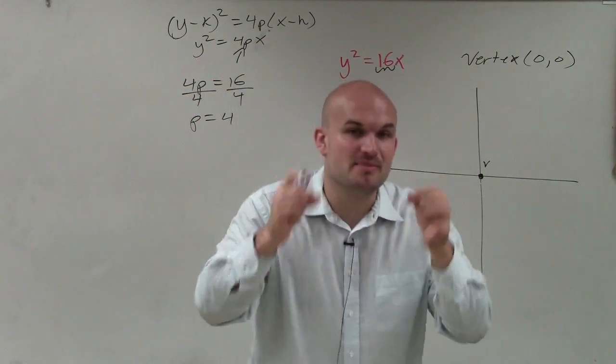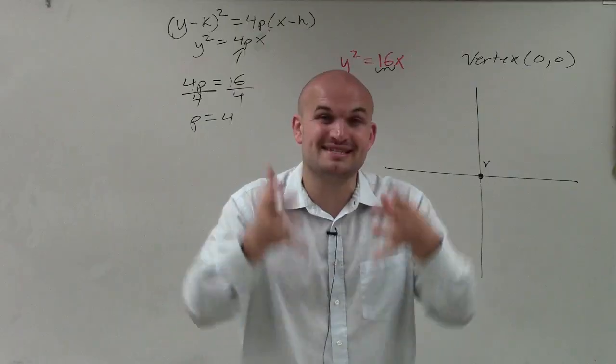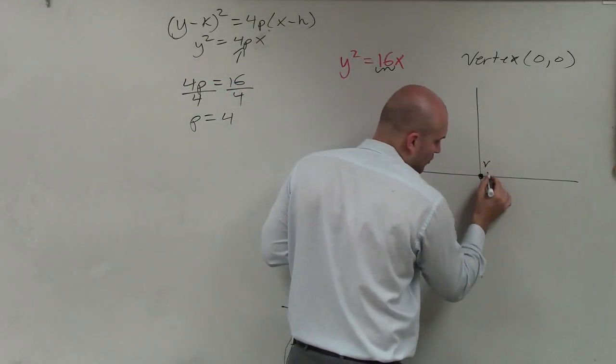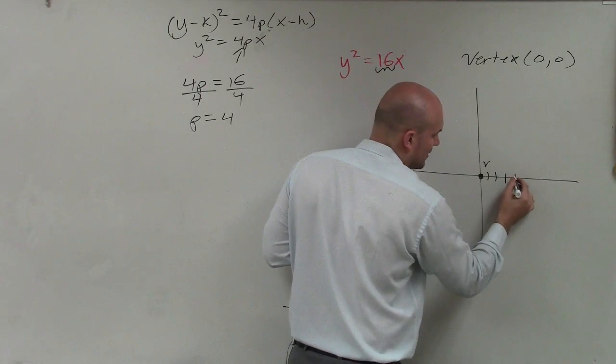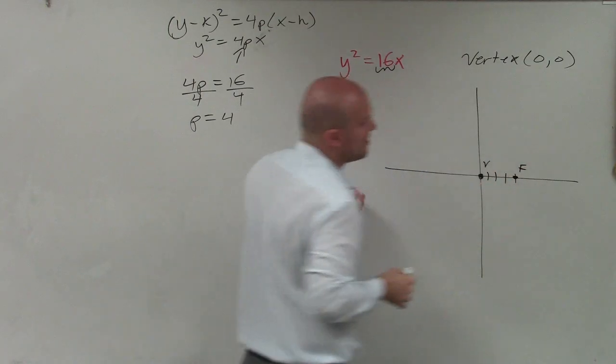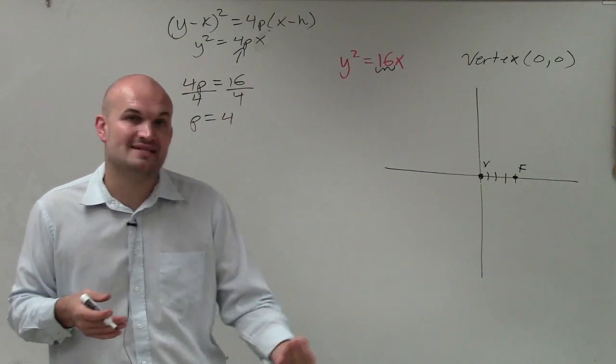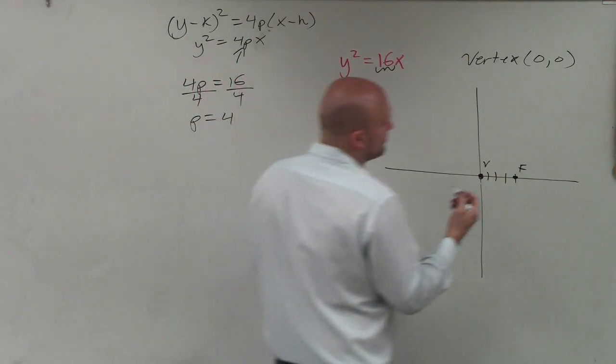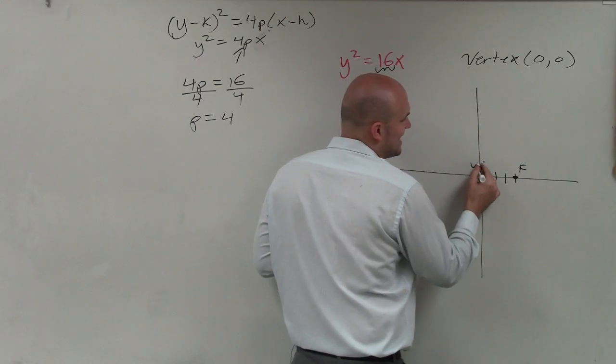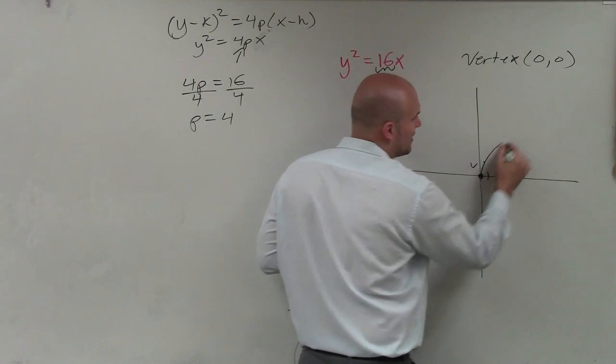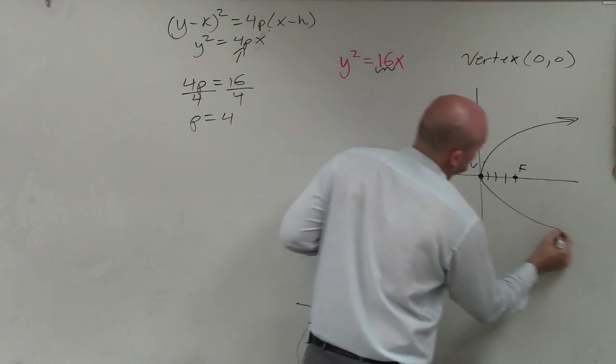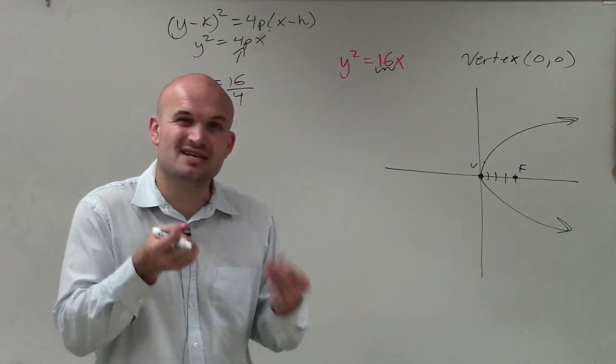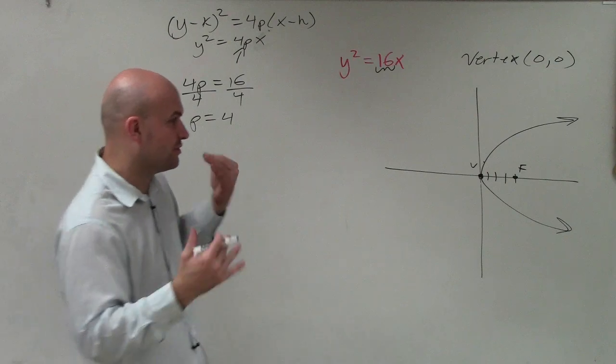That means the distance from the vertex to the focus is positive 4. So I'm going to go from my vertex and go 1, 2, 3, 4. Now I have identified my focus. If that p value was negative, then I'd have to go to the left, and the focus would be to the left. And remember, the focus is inside of the parabola. So therefore, my graph is going to open up over to the right. I'm not really going to be so concerned right now about plotting different points. It's really about understanding where the focus is and where the directrix is.